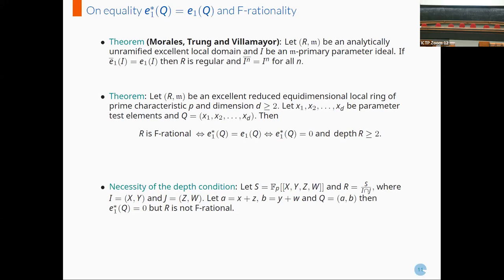Here is an example to show that the depth assumption on the ring is not superfluous. Let S be the power series ring in variables b, x, y, z, w, and R be the ring S mod (I intersect J), where I is the ideal generated by x, y and J is the ideal generated by z, w. Let a be the element x plus z, b be the element y plus z, and Q be the ideal generated by a, b. Then E1-star of Q is equal to zero but the ring is not F-rational. What goes wrong in this case is that the depth of the ring equals 1, so it does not satisfy the depth assumption. This characterization also partially answers Honike's question in certain classes of rings.